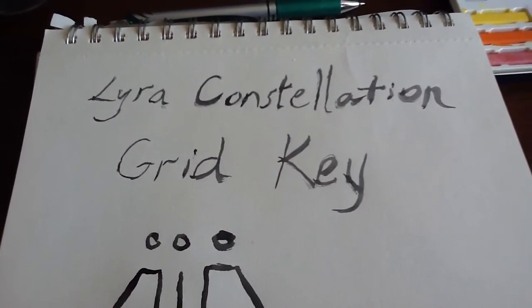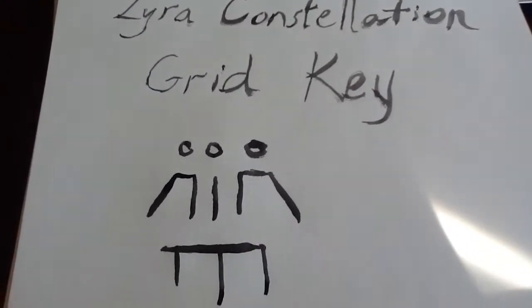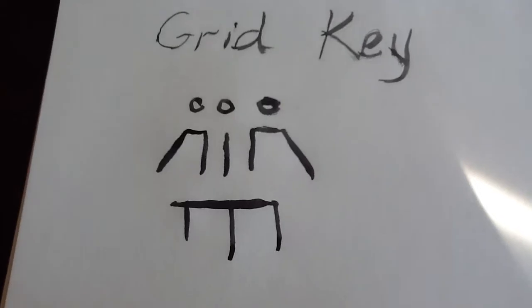So now the time is okay for us to share it with you. It's called the Lyra Constellation Grid Key and here is how it looks. I'll zoom in on it for you. I kind of like the look. It looks like a spaceship to me. I hope you enjoy it.